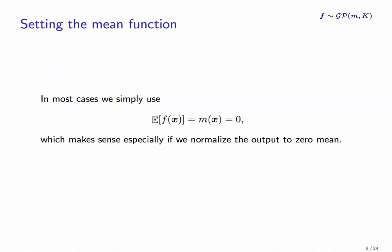Like we said before, we can use the mean function to encode some prior knowledge about our function. But in most cases, we don't know that much. So we simply set the mean function to be zero everywhere. And that also makes sense because we can always just normalize the output to have zero mean.